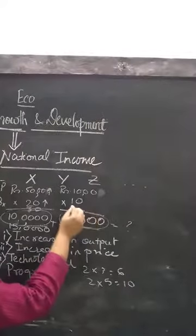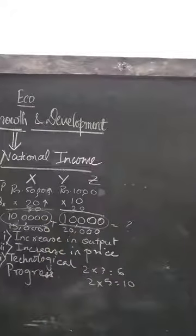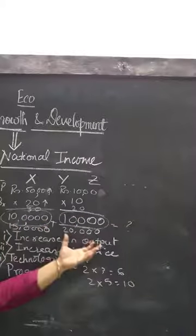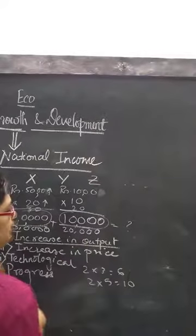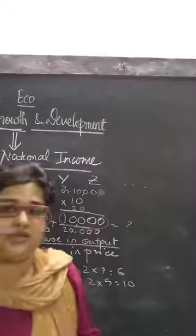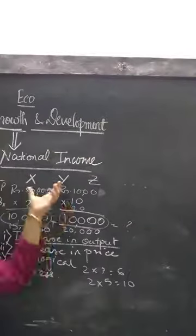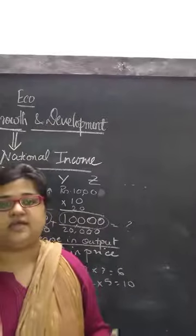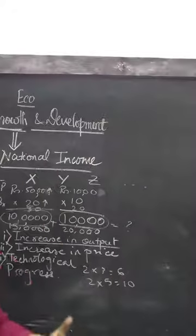Similarly, if y quantity also changes from 10 to 20, the expected income from selling y good is 20,000. So from the production increase of x and y, the estimated or expected income shows a rise. All over, it will bring a change in national income if there is an increase in the volume of output produced. Whenever there is more production in the country — in reality a country produces a wide variety of goods — if production increases then the expected income from the sale will be more, and the nation is supposed to earn more income.